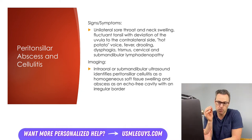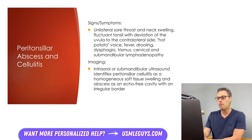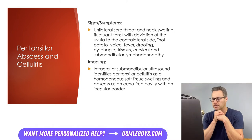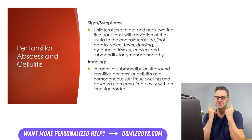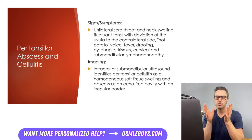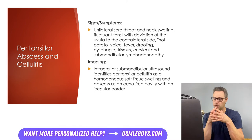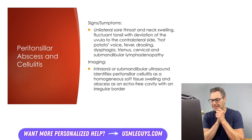Peritonsillar abscesses are the most common deep neck infections seen in children and adolescents. Symptoms typically include unilateral sore throat and neck swelling with a fluctuant tonsil and deviation of the uvula to the contralateral side. Other signs include that hot potato voice, fever, drooling, and possible trismus — lockjaw — which occurs due to irritation of the internal pterygoid muscle, causing spasming and clenching of the jaw. Patients often report a recent infectious pharyngitis, and cervical and submandibular lymphadenopathy might also be present.